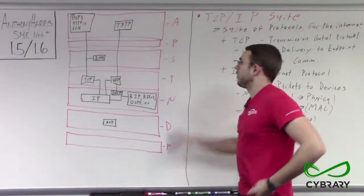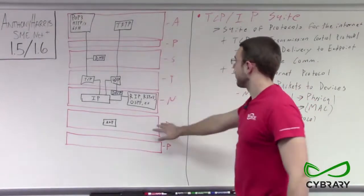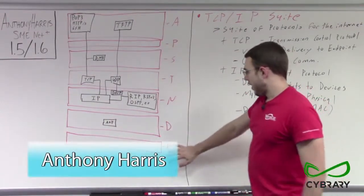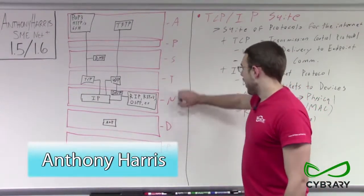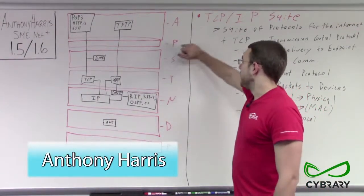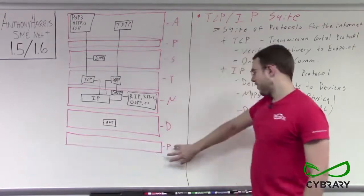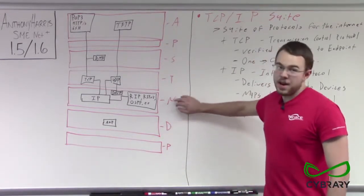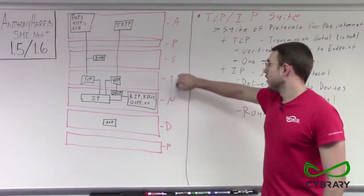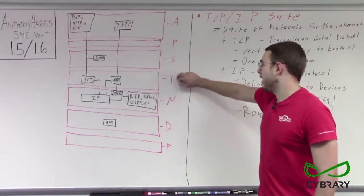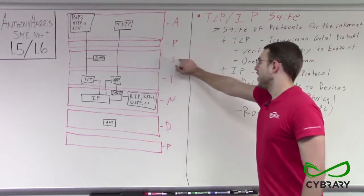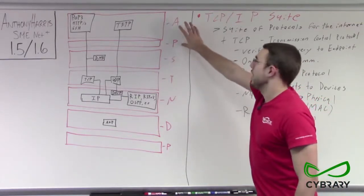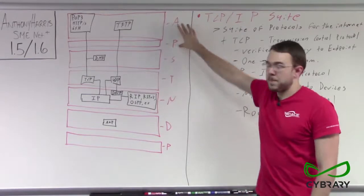This is our OSI model broken up into our different layers. We have — please do not throw sausage pizza away — the physical layer, data link layer, network layer, transport layer, session layer, presentation layer, and application layer.